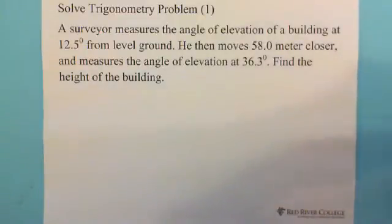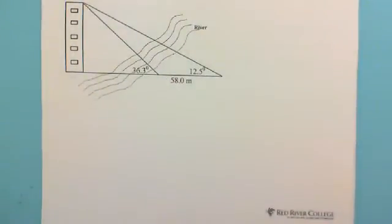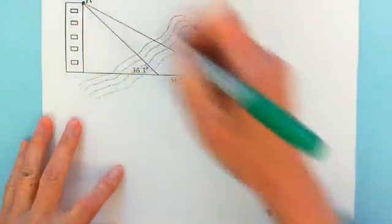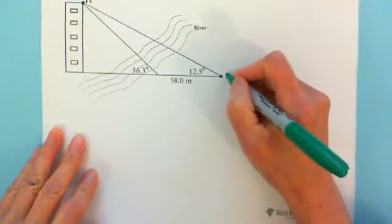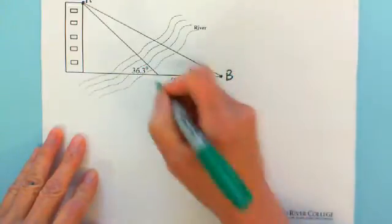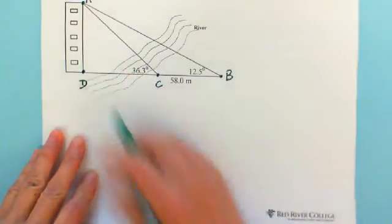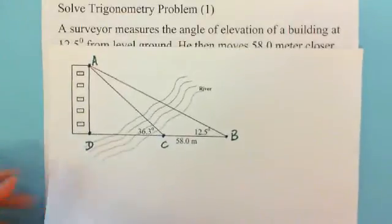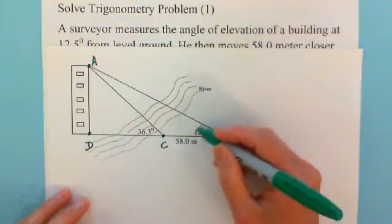I've also prepared a picture. We label the points: at the top of the building we put A. The point where the surveyor first measures is B. The second place is C. The bottom of the building is D. As we know, the angle of elevation means above horizontal.